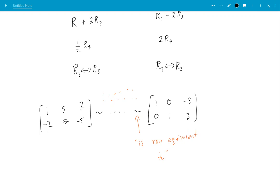So two matrices are row equivalent if there exists this sequence of elementary row operations that connect them. Okay, what else do I want to say here?